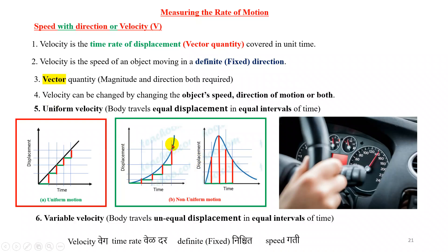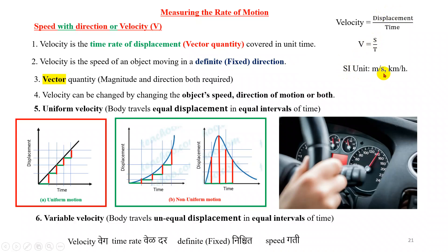Since the displacement is unequal in equal time intervals, this kind of motion is non-uniform motion, and the velocity here is called variable velocity or changing velocity. The formula for velocity is: velocity equals displacement divided by time. Note it is displacement, not distance — speed uses distance divided by time, where distance is path length, while displacement has magnitude and direction. So velocity equals displacement divided by time, with units of meter per second. Speed without direction is a scalar quantity, and speed with direction is velocity, which is a vector quantity requiring both magnitude and direction.